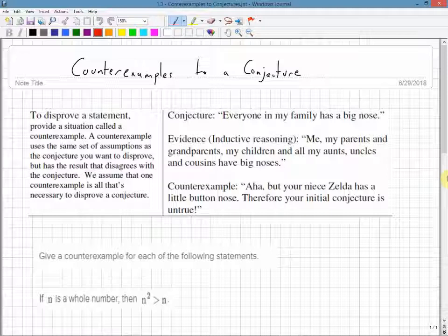We assume that one counterexample is all that's necessary to disprove a conjecture. You don't need to show ten counterexamples. All you need is one and you can say that statement is false.